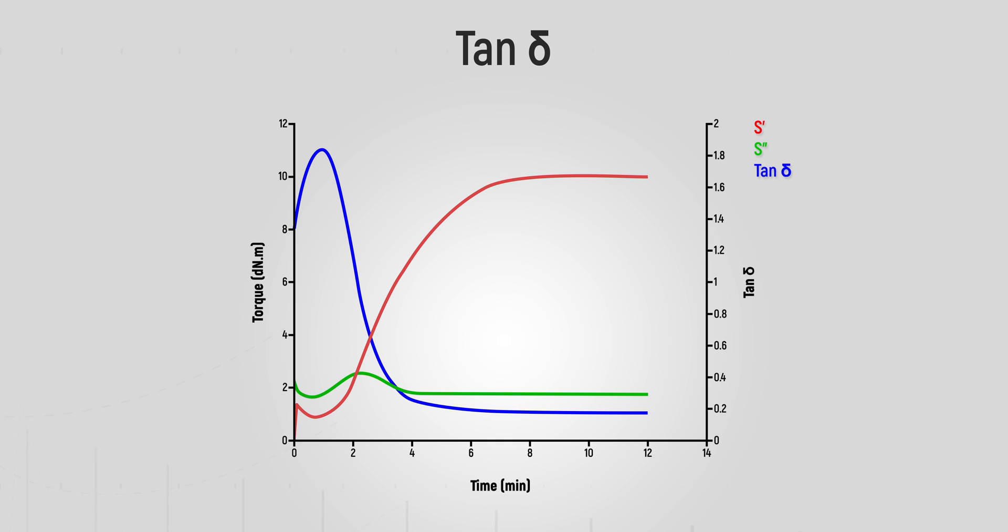Tan delta expresses the ratio of viscosity, which is flow or fluid-like movement, to elasticity, which is spring or solid-like movement. The material's tan delta value can be used to make predictions about molecular properties, processability, and cured performance characteristics.